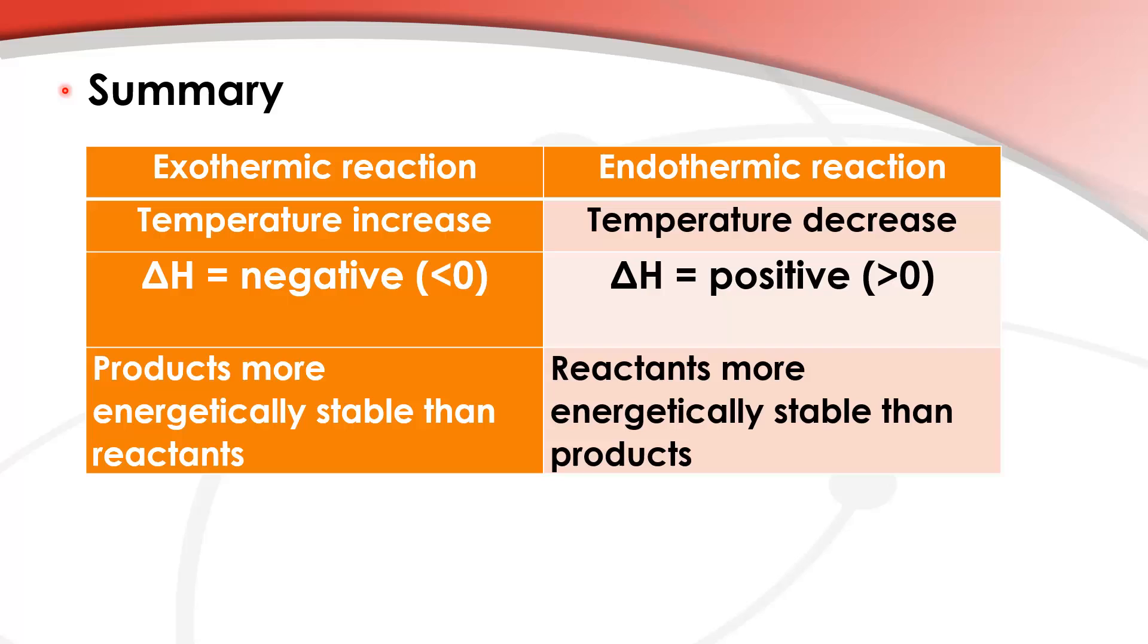Let's have a quick summary. With an exothermic reaction, we have a temperature increase. Delta H is negative or less than zero, and the products are more energetically stable than the reactants. For an endothermic reaction, we will have a temperature decrease. Delta H is positive or greater than zero, and the reactants are more energetically stable than the products.